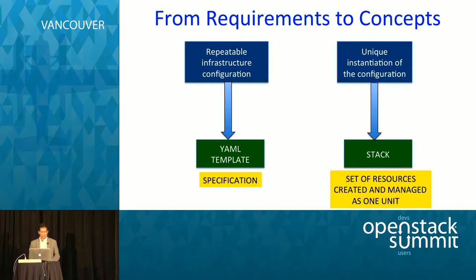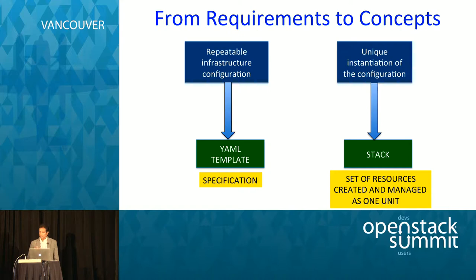Let us go from the requirements to concepts. The first requirement was to create a repeatable infrastructure configuration. That translates into the YAML template, which also functions as a specification. The second requirement is that you have to be able to create unique instantiations of the configuration, which translates into a stack. A stack is a set of resources that you create and manage as one unit. All operations that you perform after you create the stack are stack operations. So if you want to add or modify resources, you modify the template and send the modified template to the service, and the service is going to figure out what changed and make the necessary adjustments.